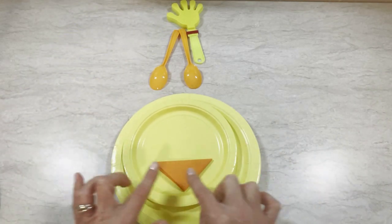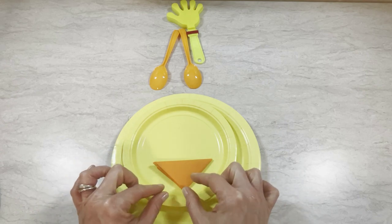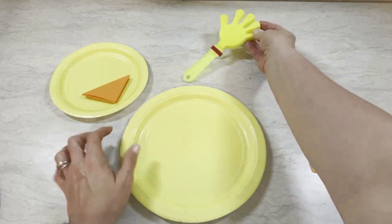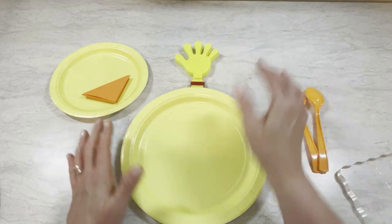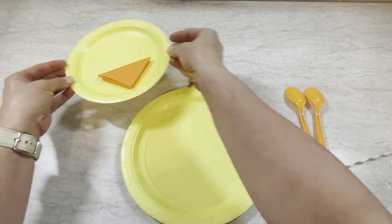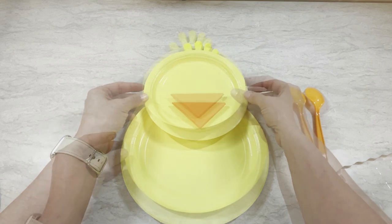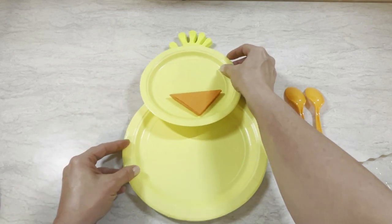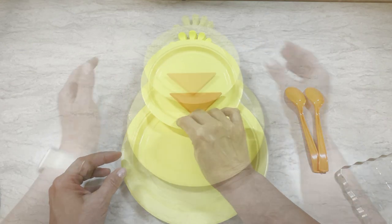You can see it's that wide short bill like we want for a duck. So I'm going to put that up under the bottom plate. Put the top plate on so that that just peeks out.